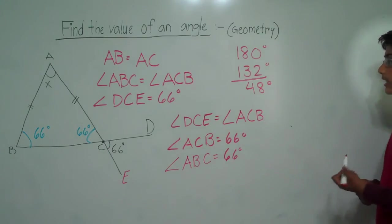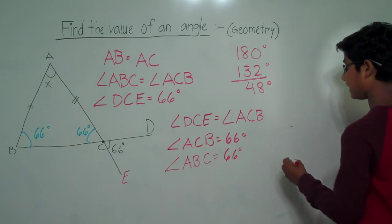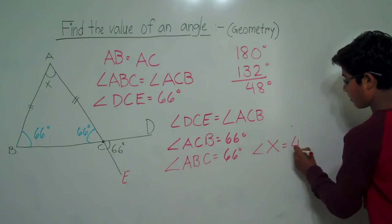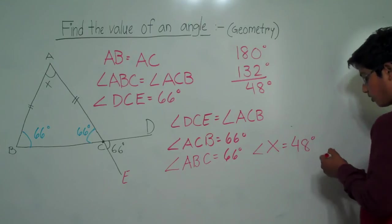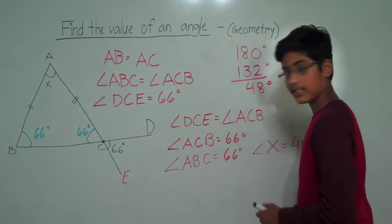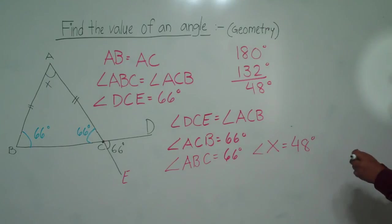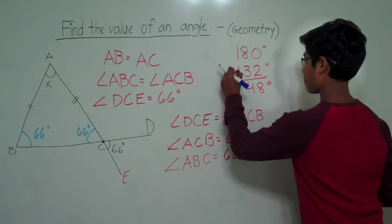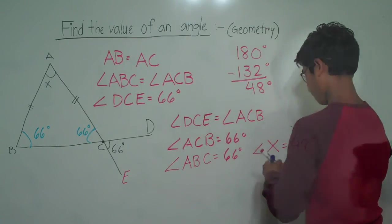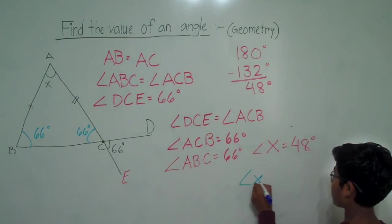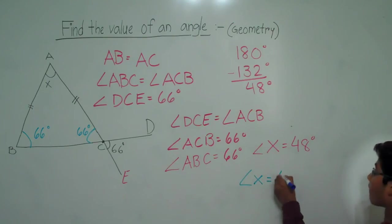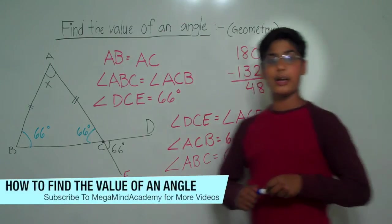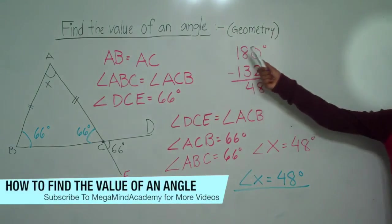So angle X is equal to 48 degrees. Today we learned about geometry: finding the value of an angle.